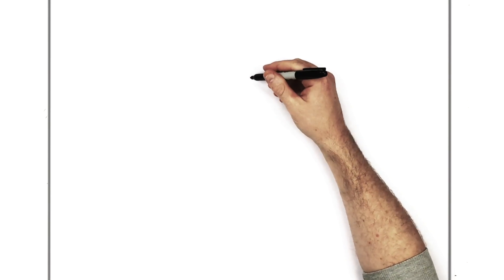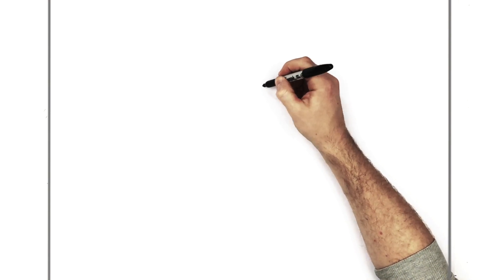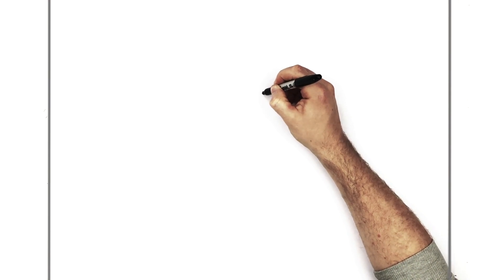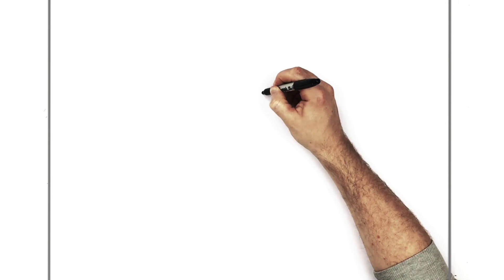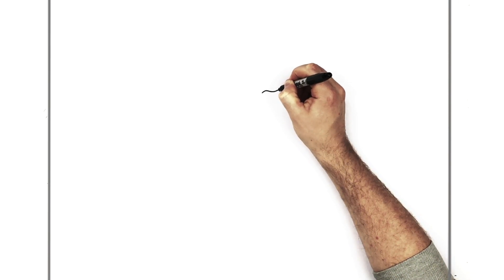We'll start with his closed eyelid. So we've got a curved line. So it goes up, down, back up, like that.